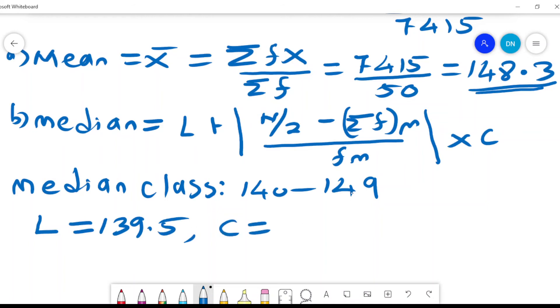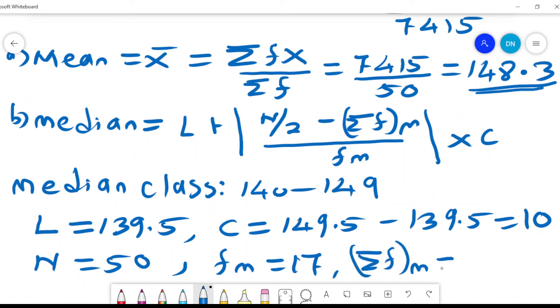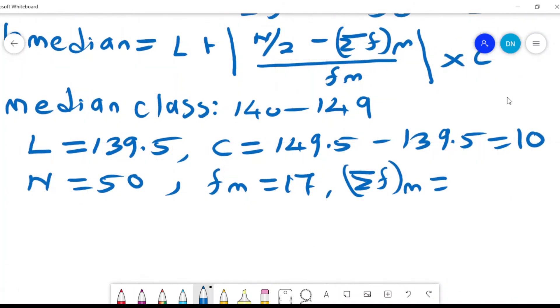The class interval, I'll take the IS value, that is 149.5 minus 139.5, and I'll find that the class interval, which is C, is given by 10. N is the number of values, and in this case, they are 50. And FM is the frequency of the median class. So our median class is 140 to 149, so what is the frequency? The frequency is 17. What about summation of F, M? This is you sum all the frequencies lower than the median class. And so which frequencies are lower than the median class? It is 4 and 6. And so that will give me 10.